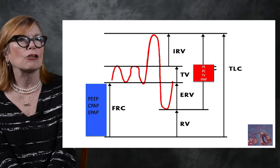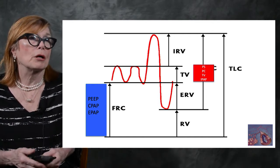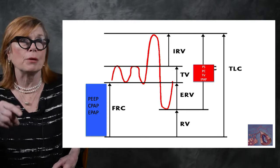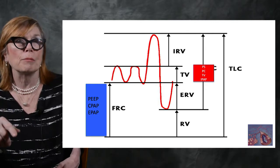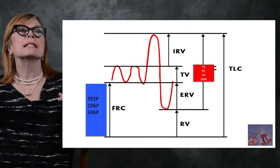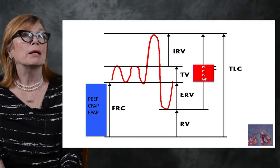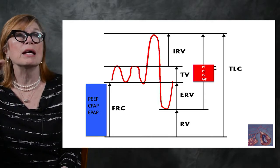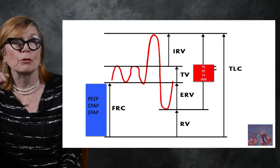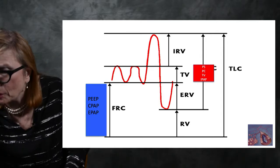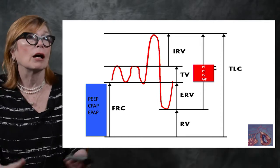Looking at a respiratory function diagram: we breathe in and breathe out — that is our tidal volume. We can breathe in as much air as possible — that's known as inspiratory reserve volume. We can also breathe out as far as possible — that's our expiratory reserve volume, often called forced expiratory volume.